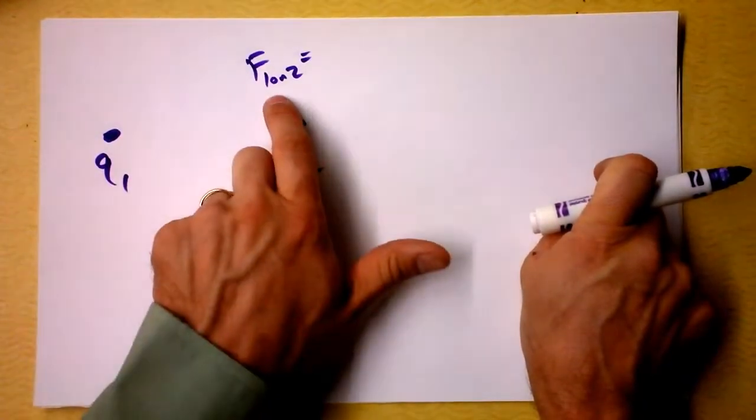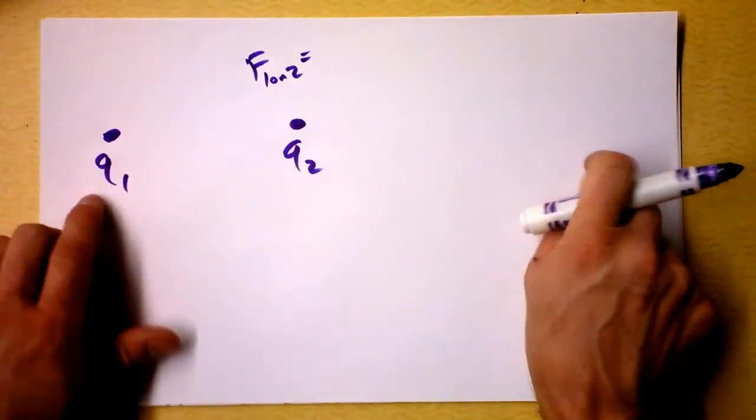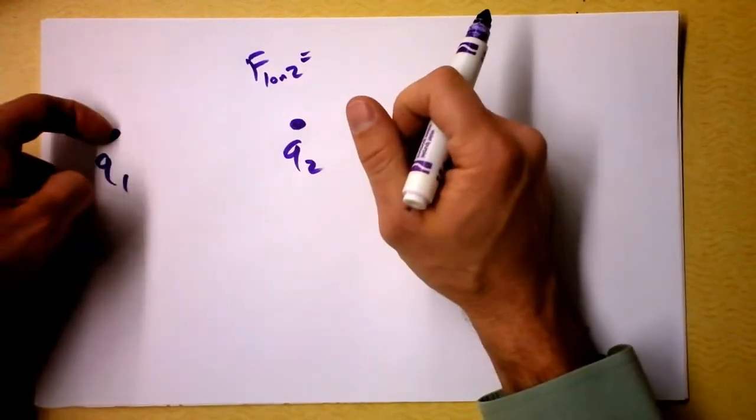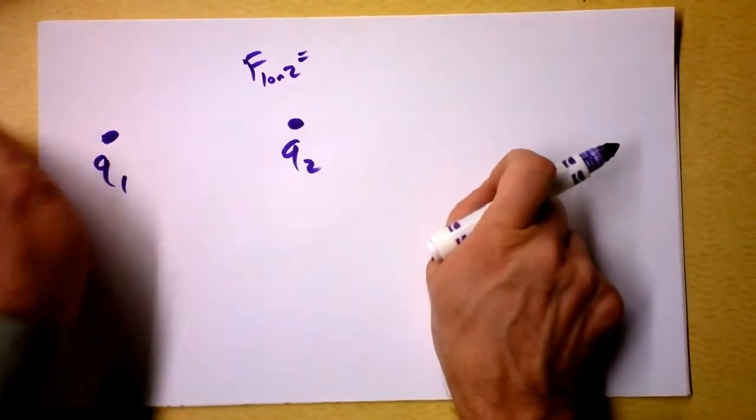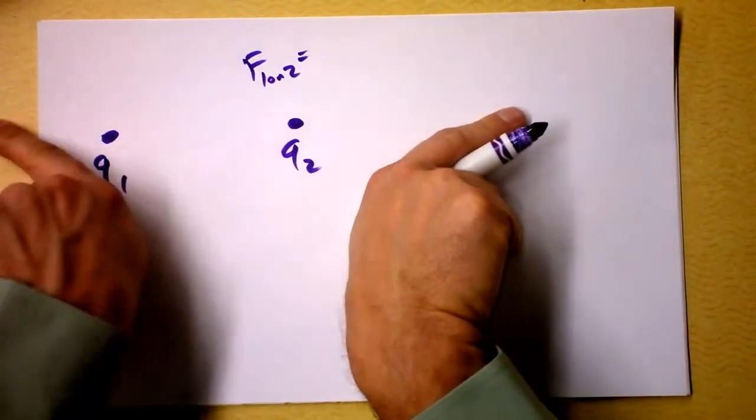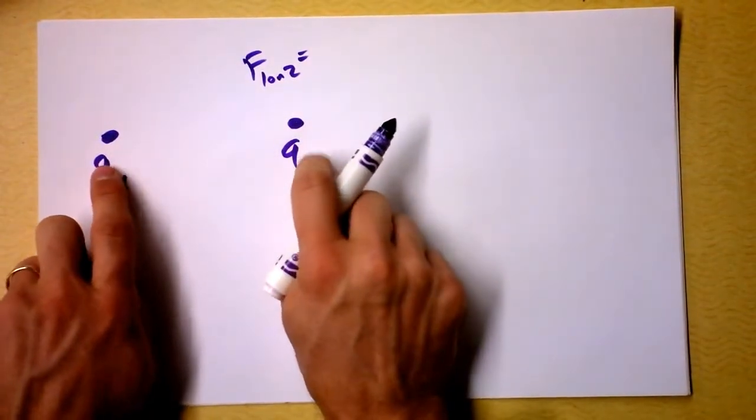Newton's third law requires that the force of one on two is the opposite of force of two on one. So if this one is pulled in, that one is pulled in. If this one is pushed out, that one is pushed out. You notice out is opposite directions for these two guys' experiences.